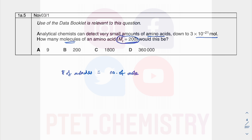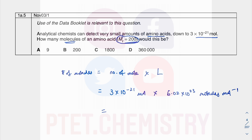The number of moles is 3 × 10⁻²¹ mol. Multiply by Avogadro's constant, 6.02 × 10²³ molecules per mole — the 'per mole' makes sense because it's the number of molecules in one mole, and the mole units cancel out.